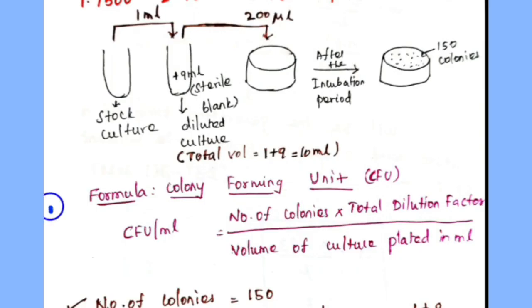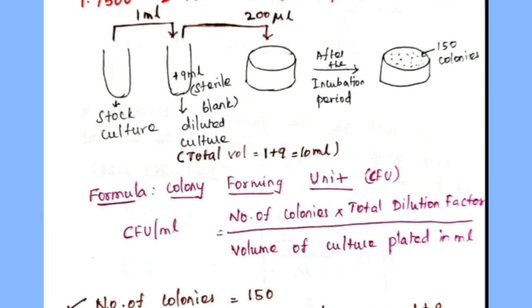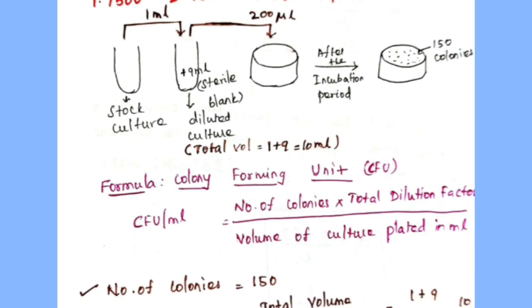The formula to calculate colony forming units is: CFU per ml equals the number of colonies multiplied by the total dilution factor, divided by the volume of culture plated in ml. In this problem, the number of colonies is equal to 150.